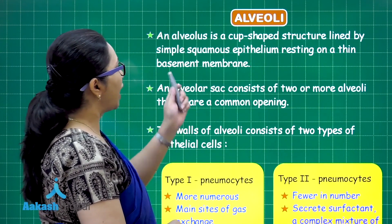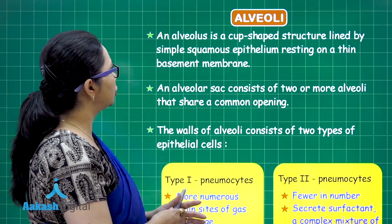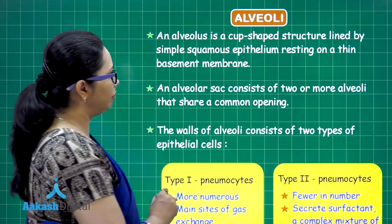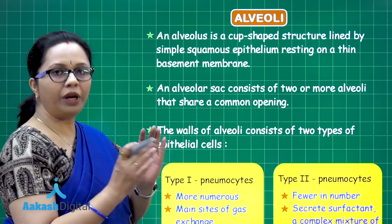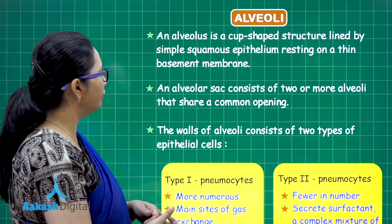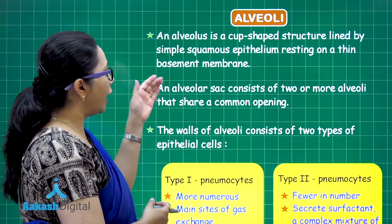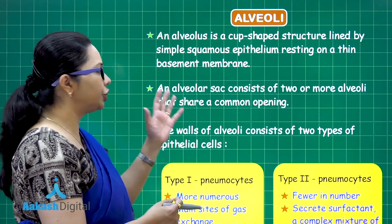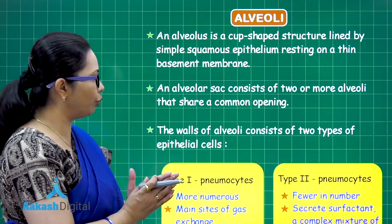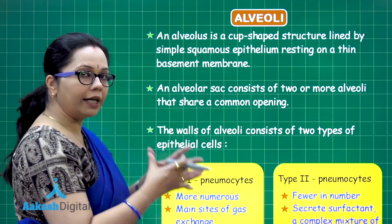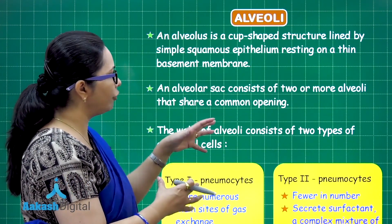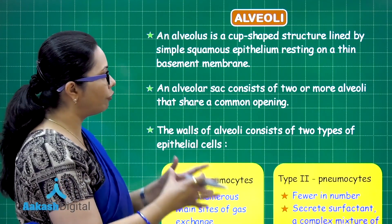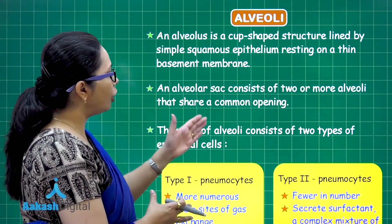The alveolus is a cup-shaped structure lined by simple squamous epithelium and resting on a basement membrane, just like any epithelium. The alveolar sac is the largest structure, consisting of two or more alveoli which share a common opening.